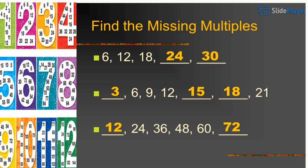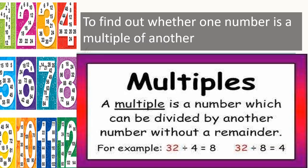Here are the missing multiples children. Now to find out whether one number is a multiple of another, we will divide the number. If our remainder is 0, then we can say that it is a multiple of the previous number. For example, 32 divided by 4: I am getting quotient as 8 and remainder as 0. So I can say that 32 is a multiple of 4 as well as 32 is a multiple of 8.